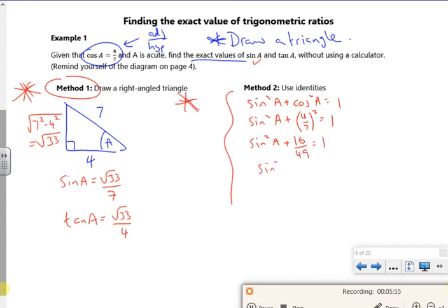So sin² A is, take away 16 over 49. So I've got 49 over 49 take away 16 over 49, that gives me 33 over 49. And then square root it gives me root 33 over 7. So that's what we've done.